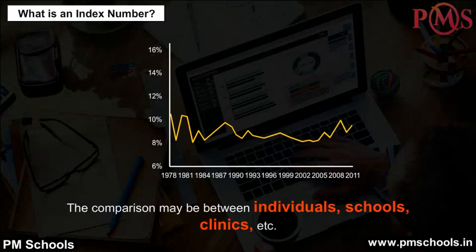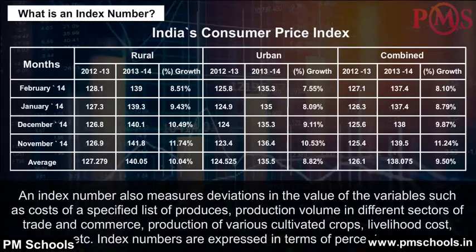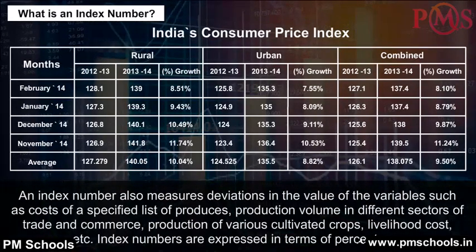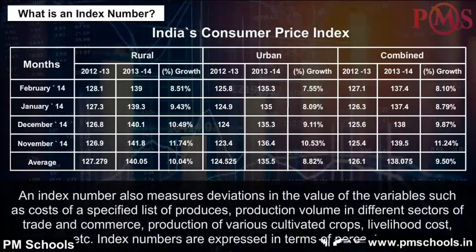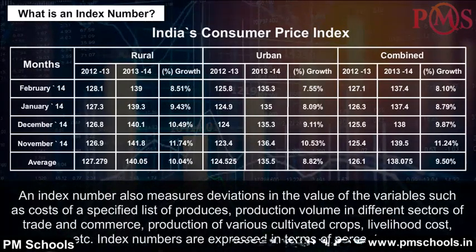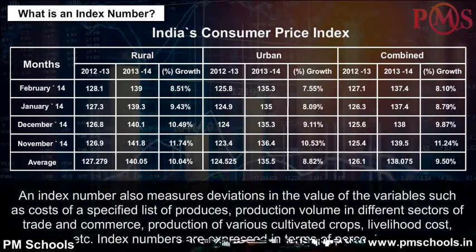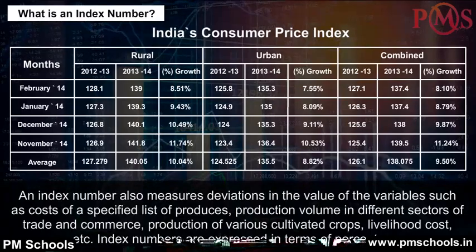The comparison may be between individuals, schools, clinics, etc. An index number also measures deviations in the value of variables such as costs of a specified list of producers, production volume in different sectors of trade and commerce, production of various cultivated crops, livelihood cost, etc. Index numbers are expressed in terms of percentage.